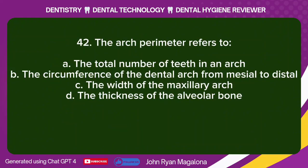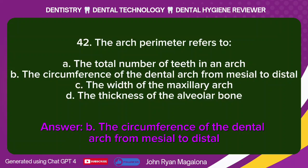Question 42: The arch perimeter refers to: A. The total number of teeth in an arch. B. The circumference of the dental arch from mesial to distal. C. The width of the maxillary arch. D. The thickness of the alveolar bone. Answer: B. The circumference of the dental arch from mesial to distal.